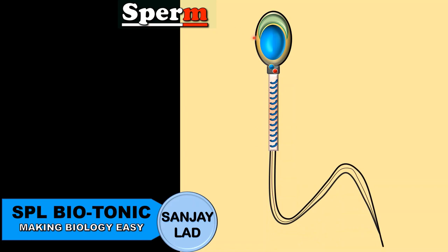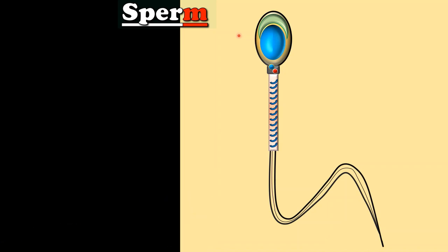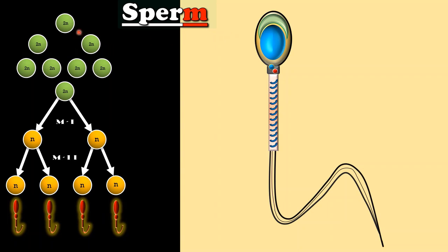The job of the sperm is to fuse with an ovum to form the zygote. Primary spermatocytes undergo meiosis to form sperm. This entire process is called spermatogenesis.